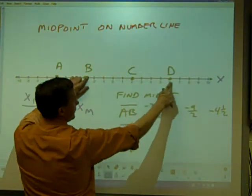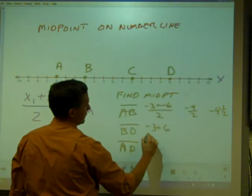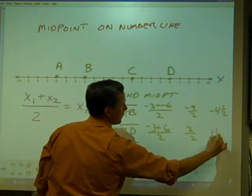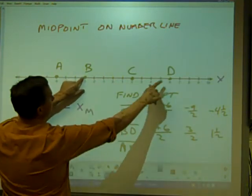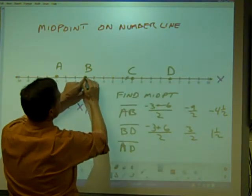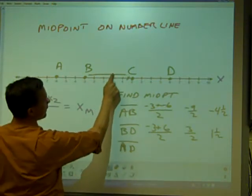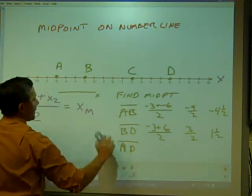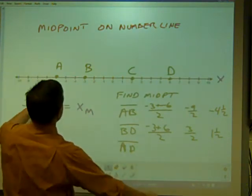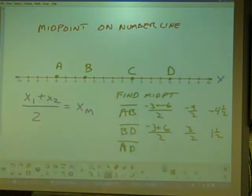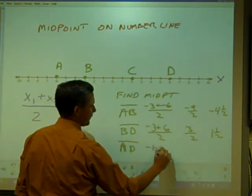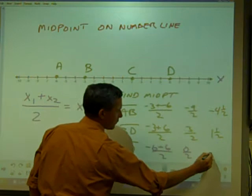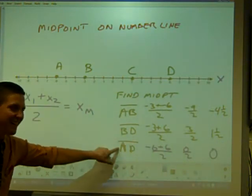BD from negative three to positive six: negative three plus six is three, three over two is one and one half. Between B and D, the midpoint is right there. Finally, AD: negative six to six. Well this one I think is a little more obvious - six each way. But negative six plus six over two, zero over two. How many twos does it take to make zero? Zero. That's the midpoint of AD.